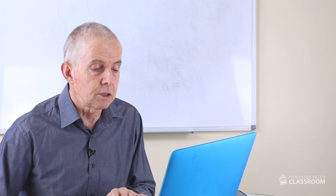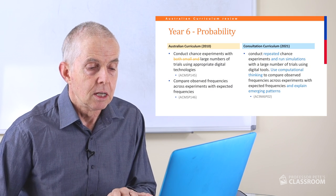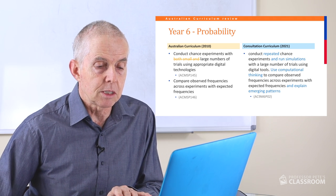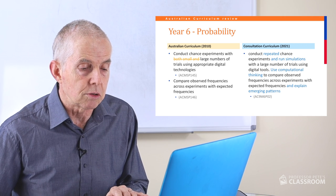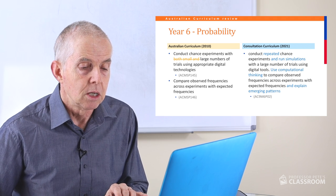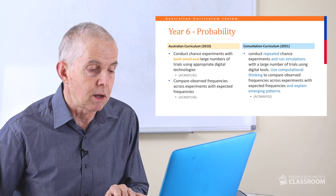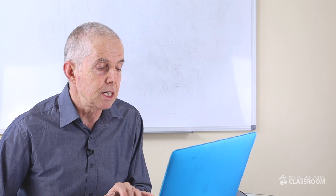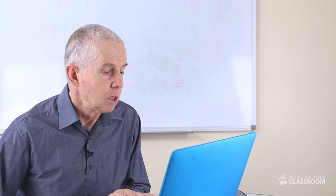The second probability content descriptor — also combining two previous ones — states: conduct repeated chance experiments and run simulations with a large number of trials using digital tools; use computational thinking to compare observed frequencies across experiments with expected frequencies and explain the emerging patterns. There we have the patterns appearing again. This has been clarified with more detail, and I don't think it requires any further comment.